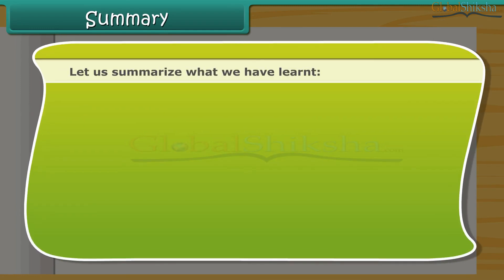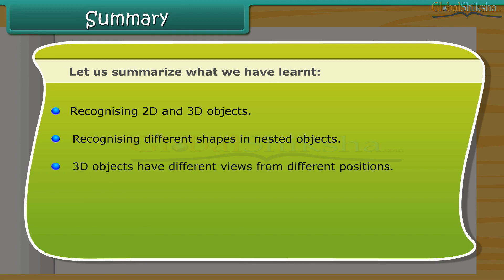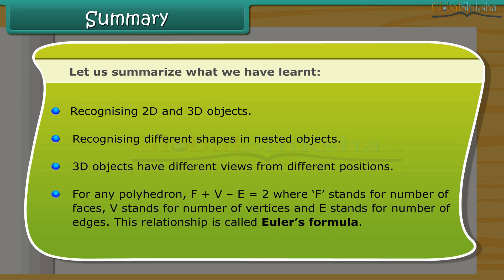Let us summarize what we have learned: recognizing 2D and 3D objects, recognizing different shapes in nested objects, understanding that 3D objects have different views from different positions. For any polyhedron, F + V − E = 2, where F stands for number of faces, V stands for number of vertices, and E stands for number of edges. This relationship is called Euler's formula.